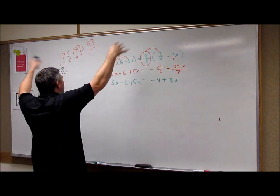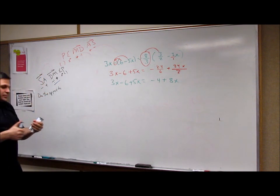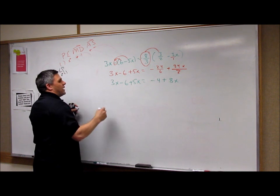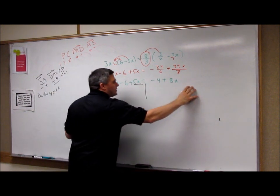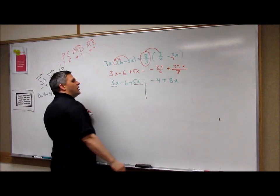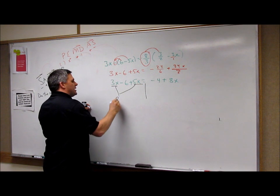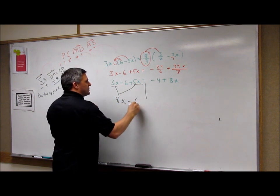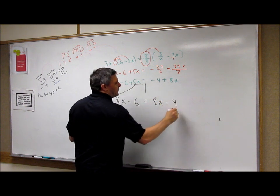So you deal with them first, then we manipulate the stuff. Now I've got to add my like terms. I need to look at x and x. Do the adding, and we get 8x minus 6 equals 8x minus 4. Remember, the x's go first.